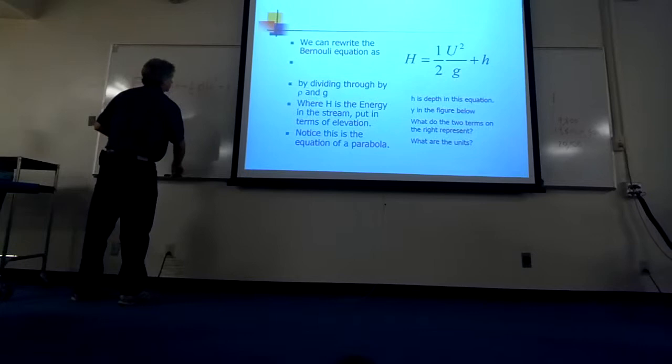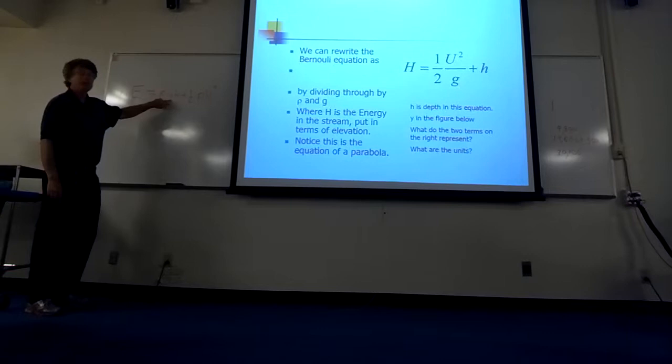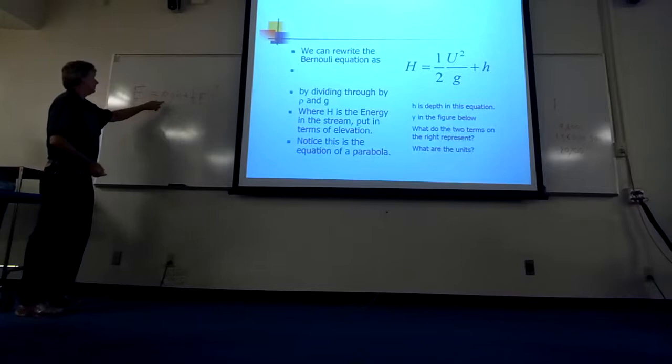And then if we divide through by our constants, by density and gravity, then you're basically dividing by 1,000 times 9.8, or 9,800, right?